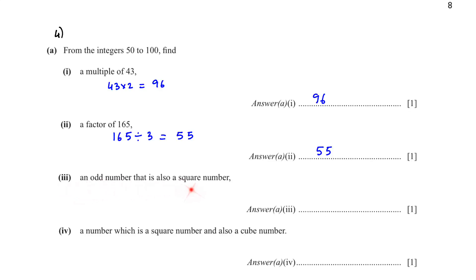A3. An odd number that is also a square number. We know that 7 square is 49, but it is less than 50. 8 square is 64, but it is an even number. So let's try 9 square. 9 square is 81, and it is also an odd number and between our range. So our answer is 81. A number which is a square number and also a cube number. 8 square is 64, and 4 cube is 64. So the answer is 64.